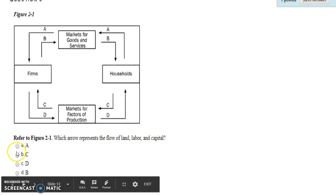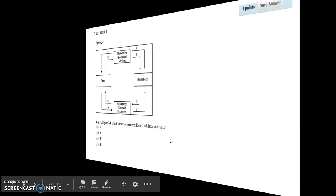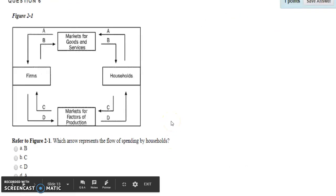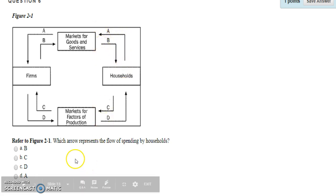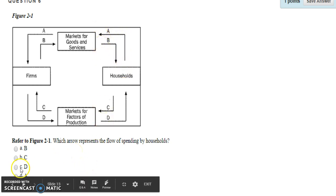Which arrow represents the flow of spending by households? Households spend money to get goods and services. The outside of the diagram represents the flow of money, and A is the only arrow that represents spending by households, so the answer is A.